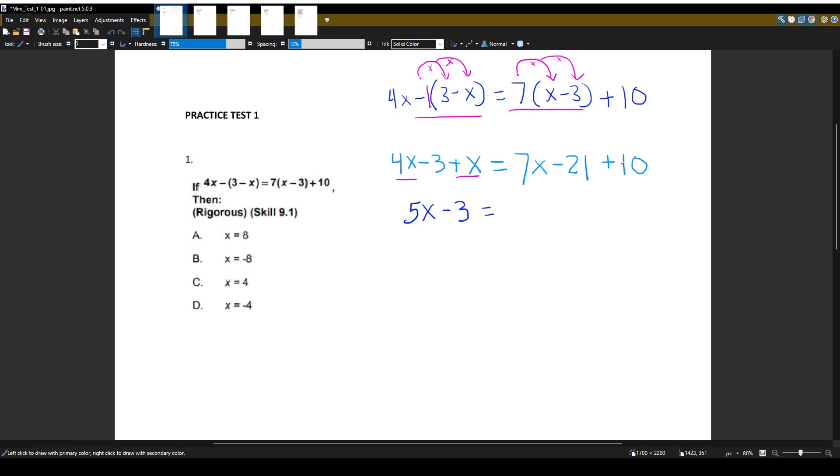Equals. On the right side, do we have any like terms? Let's see here. We only have 1 x term, so that's not going to combine with anything. We have a negative 21 and a plus 10. Two numbers without a variable. So let's add those together. So 7x, we did not do anything with that. And negative 21 plus 10 gives us negative 11.